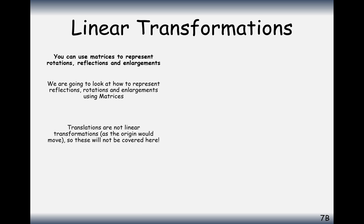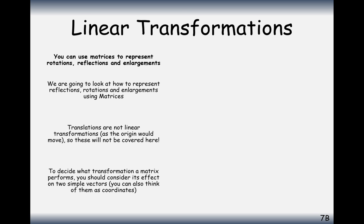Just before we get started, the reason we're not going to be looking at translation type transformations is because this is a type of transformation that would move the origin. When we look at reflections and rotations, the line of reflection is always going to be through the origin so that the origin doesn't move. The point of rotation is always going to be around the origin. No matter what you do with translations, that origin is going to move, so it can't be represented as a matrix transformation. We're only looking at types of transformations that will have the origin staying exactly where it is.